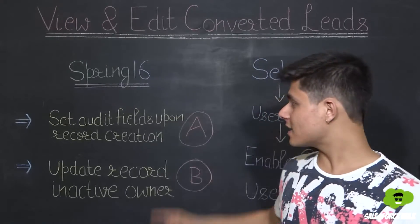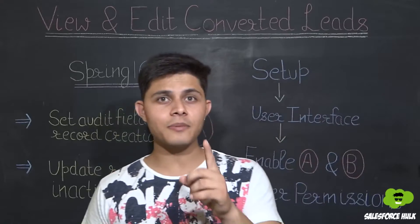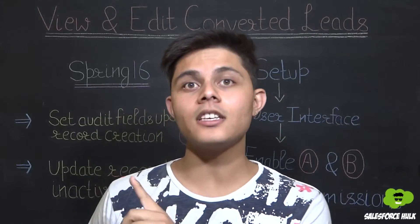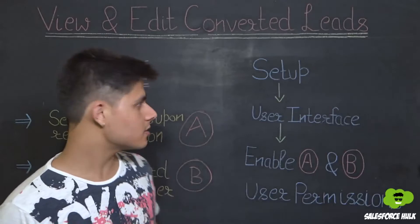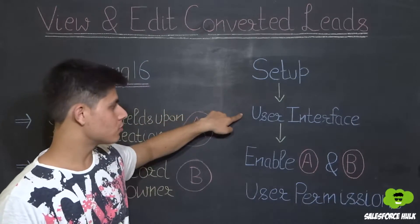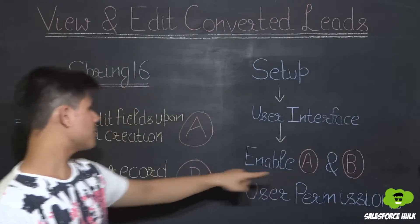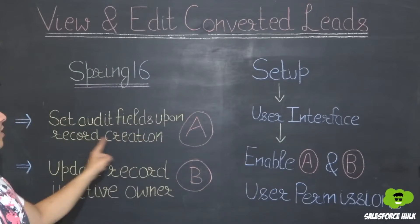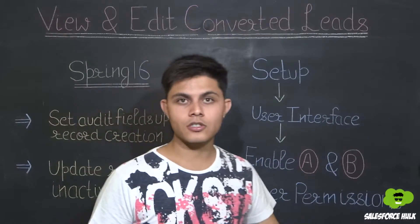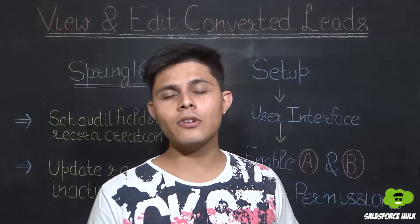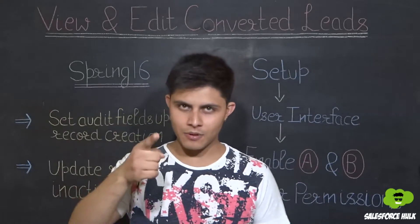If you are trying to locate the two Spring 16 permissions in your profile or in permission sets, you first need to enable them from Setup. Go to User Interface, and enable: A — Set Audit Fields Upon Record Creation, and B — Update Records with Inactive Owner user permissions. You first need to enable them here, and then you will find them available in profiles and permission sets.